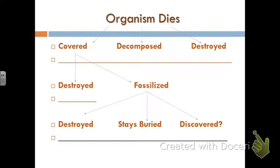When we did our fossil research last week, you got a diagram on the 'That's Fossils' assignment in your notebook on page 163. When an organism dies, three things can happen: it can get covered or buried, be exposed and decompose, or be destroyed. The ones that get buried can still be destroyed or become fossilized. Once fossilized, they can be destroyed, stay buried and never be discovered, or finally be discovered and tell us something about the organism that once lived.